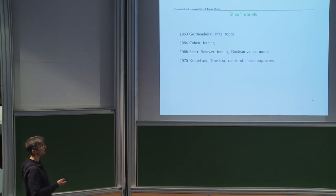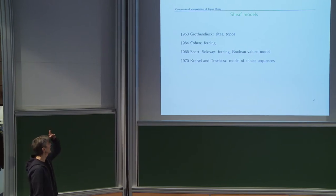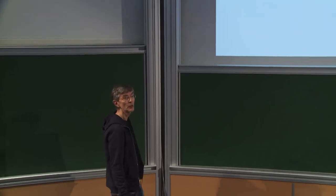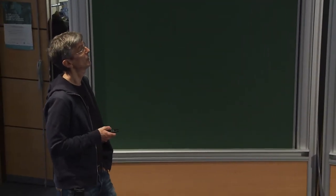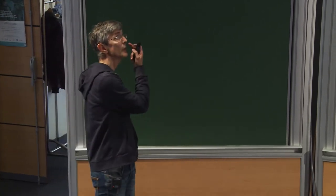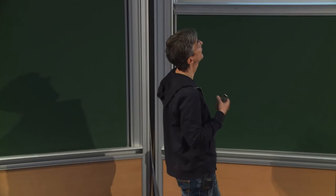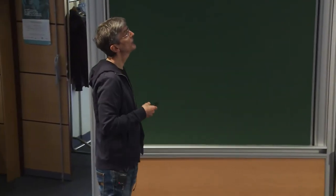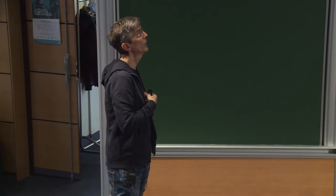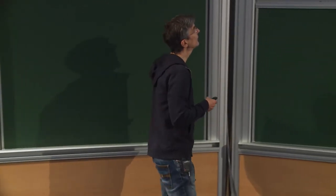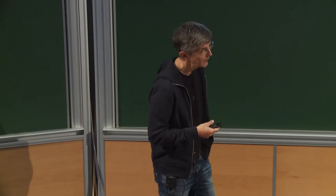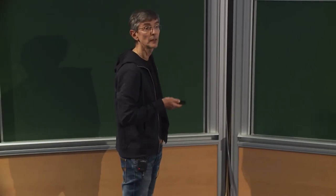In the 1960s, Grothendieck generalized the notion of sheaves to a site — not only over a topological space. In logic around 1964, Cohen introduced a method of forcing to prove independence results. This method was reformulated in 1966 by Dana Scott as a Boolean-valued model, and the connection with topos became clear. Then in the 1970s, there was an example of a site model, actually in logic. Brouwer had a notion of choice sequences, and Kleene and Troelstra also tried to formalize and understand the semantics of this idea, and the semantics is captured by a site model.